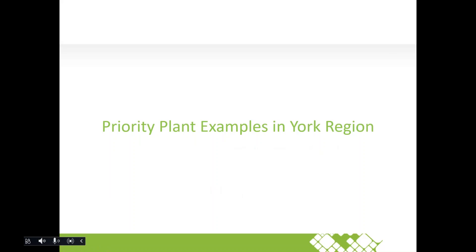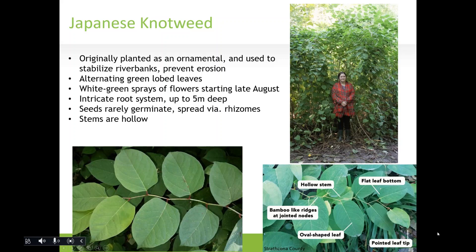Now we'll talk about some priority plant examples in York Region — this is not a definitive list but some examples to keep an eye out for. We'll start with Japanese knotweed. It's native to eastern Asia, originally planted as an ornamental species, and was used to stabilize riverbanks and prevent erosion because of its root system. Key ID features include alternating large lobed leaves on the stem, and a spray of white flowers later in the growing season.